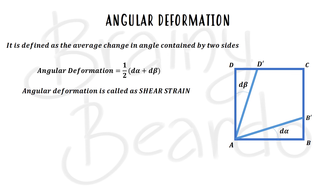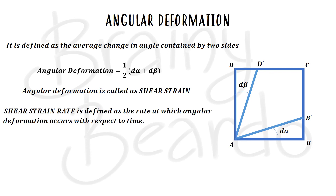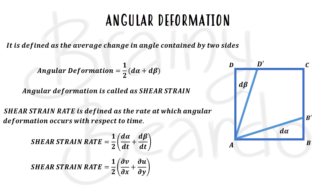Since the deformation occurs with respect to time, we define the shear strain rate as the rate at which angular deformation occurs with respect to time. Mathematically, shear strain rate = ½(dα/dt + dβ/dt) = ½(∂v/∂x + ∂u/∂y), which was derived in the rotation derivation.